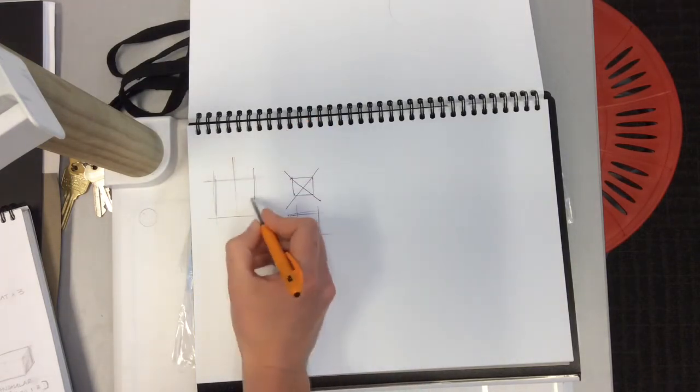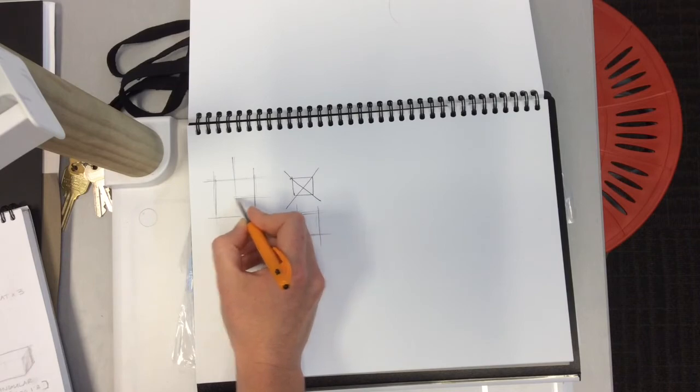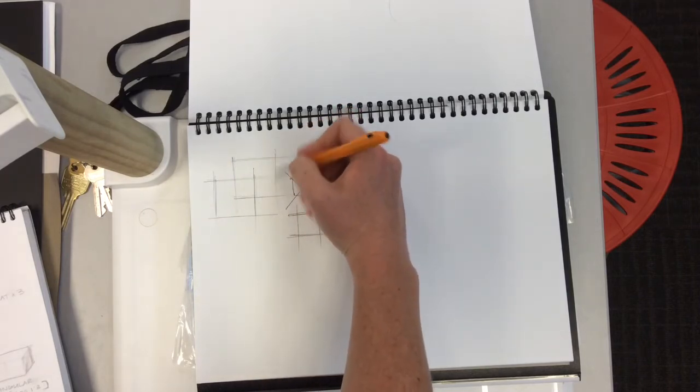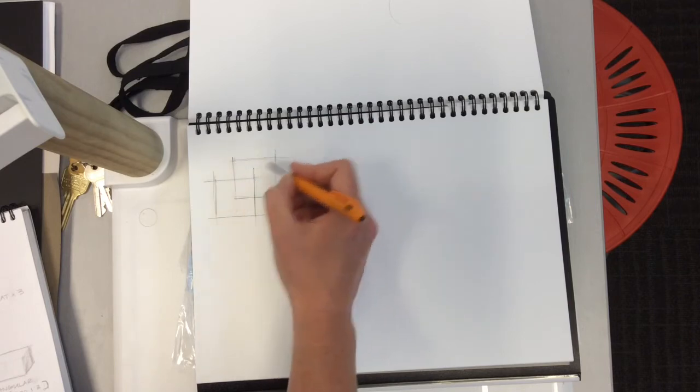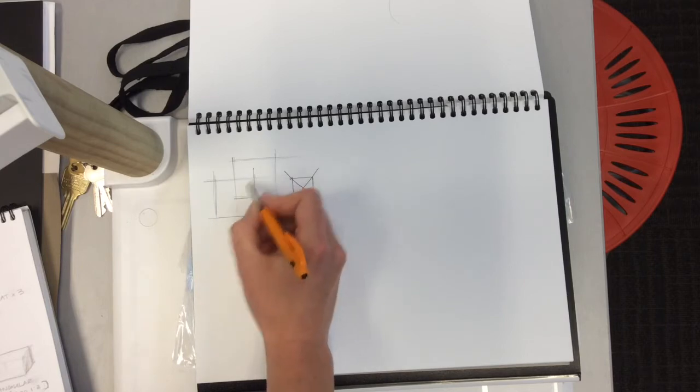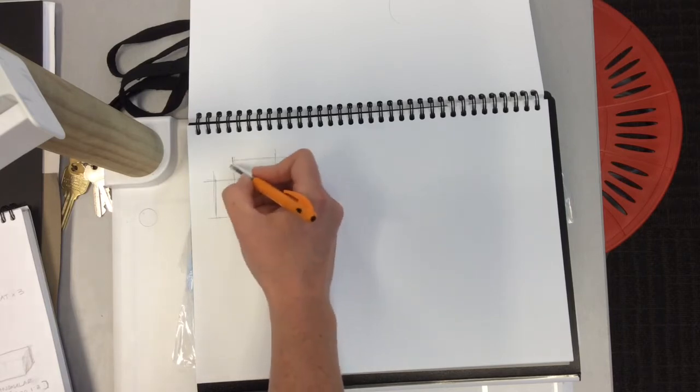Here I'm drawing a second square on top of the first one. See how it's kind of centered in the middle of this front square.